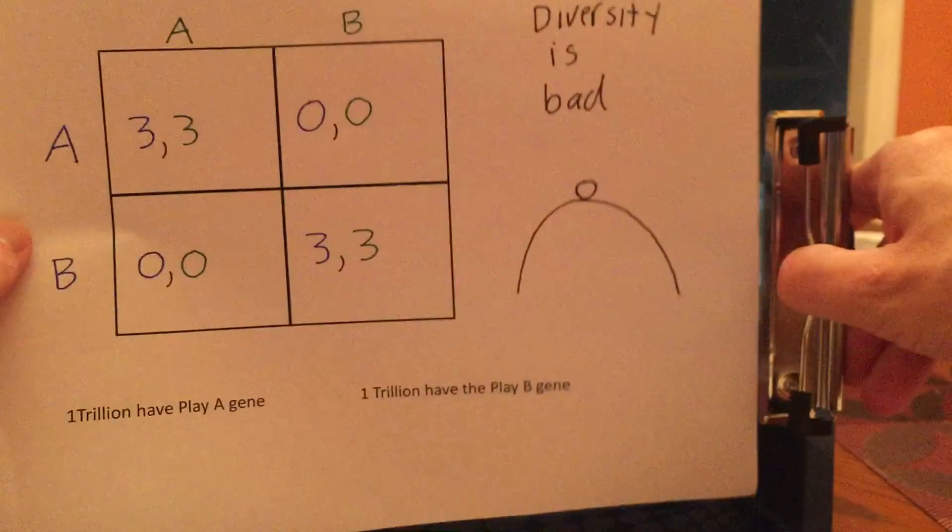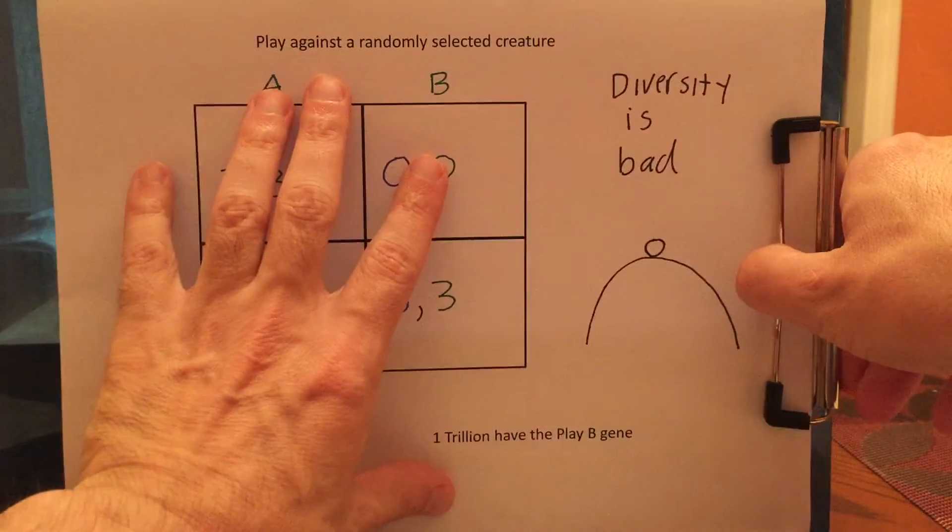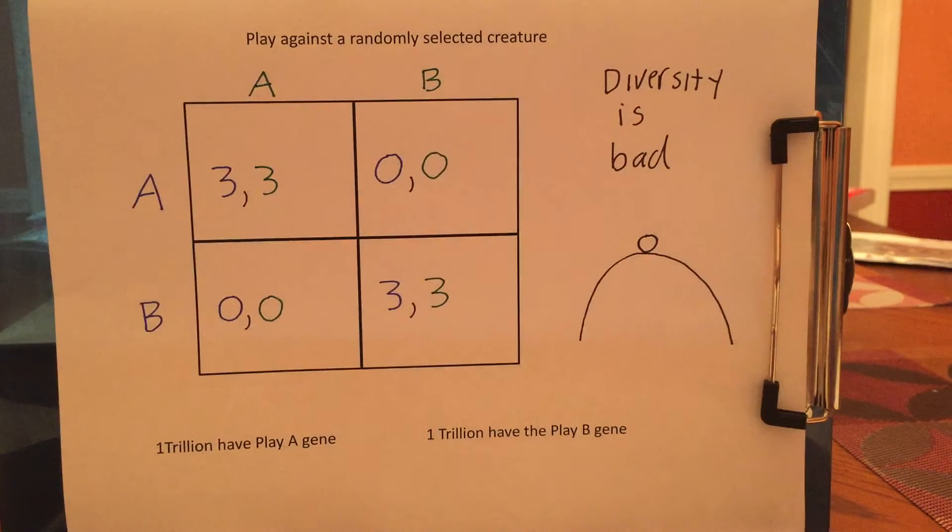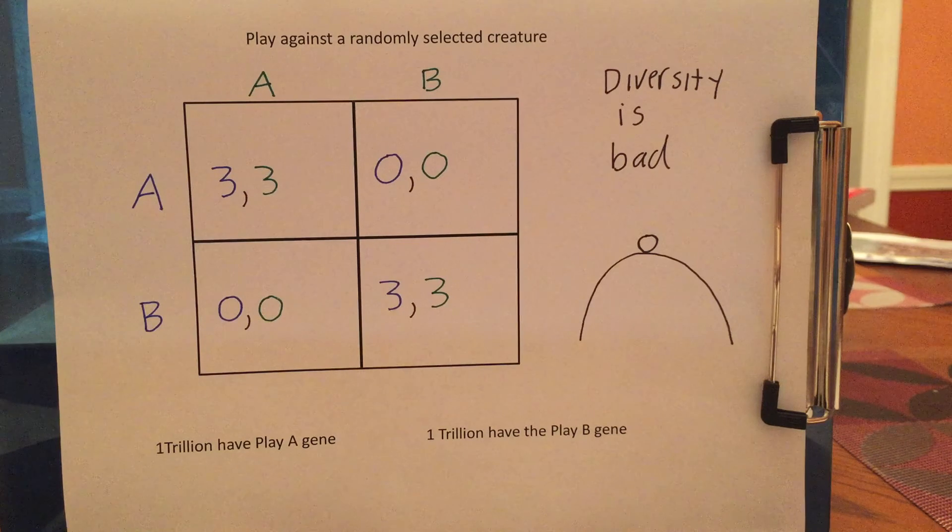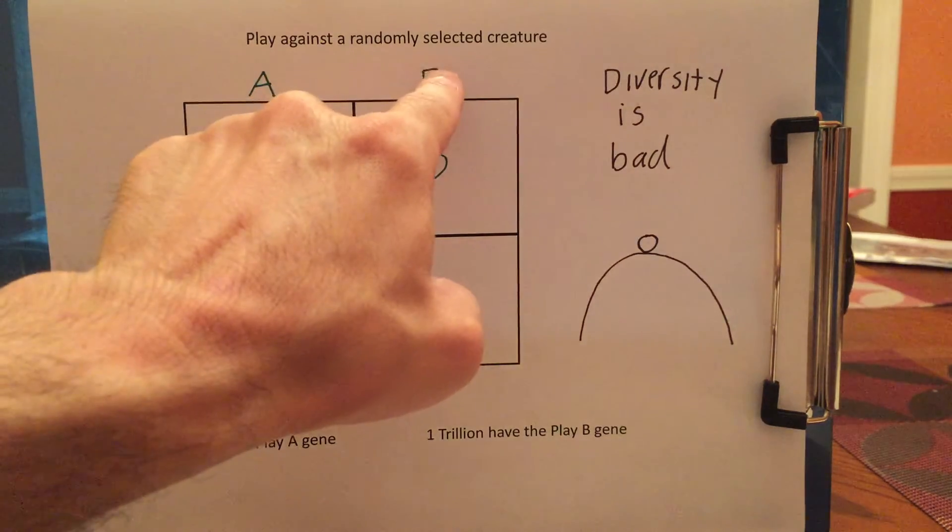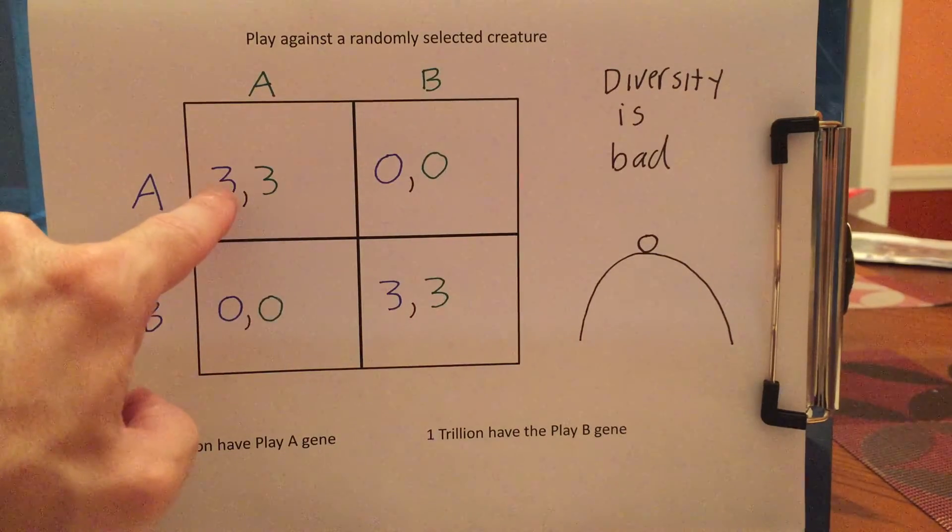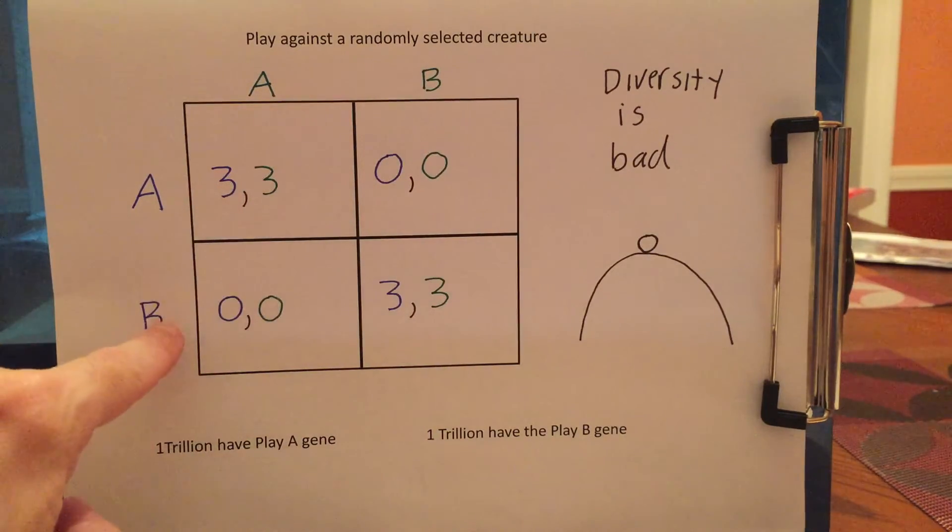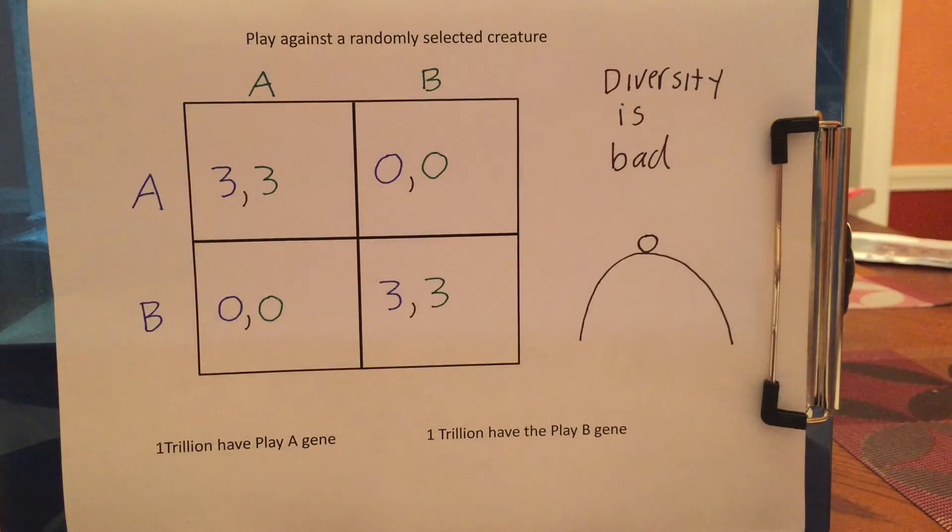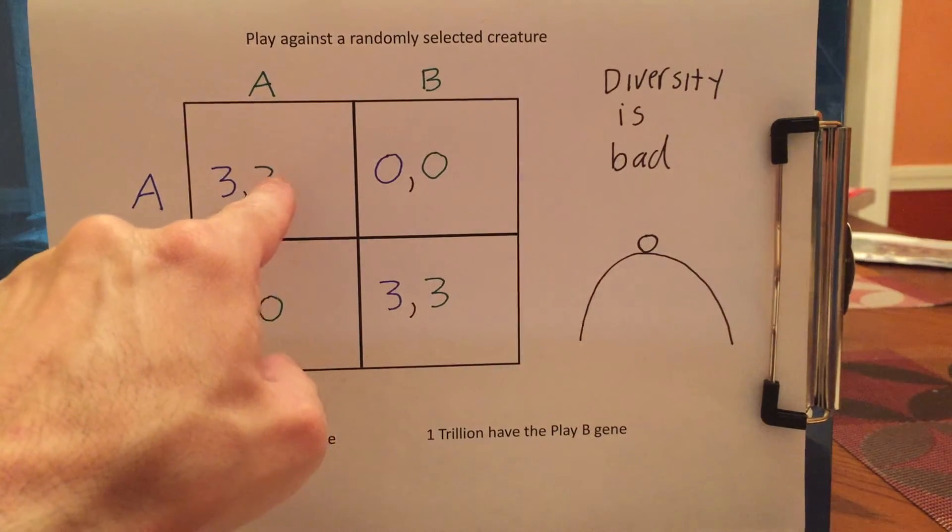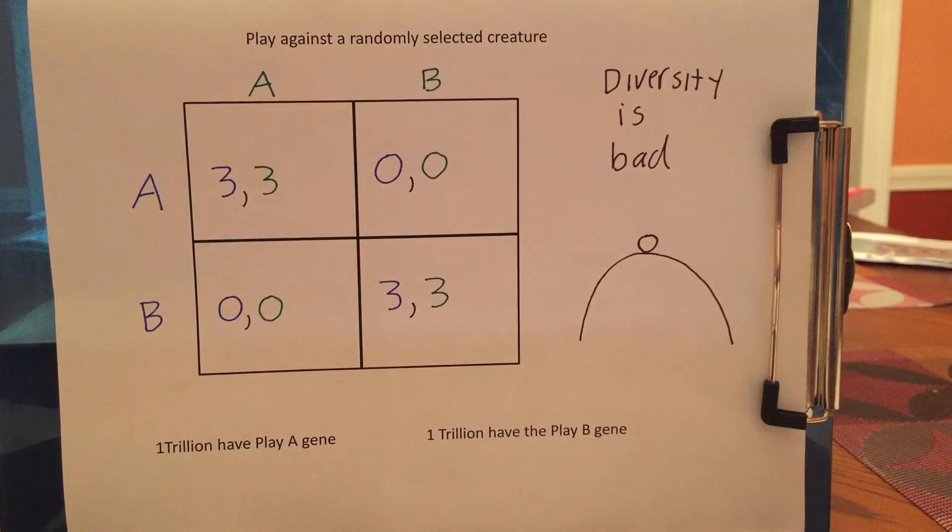Let's now consider this in the context of a coordination game. So here is a simple coordination game. And of course the Nash equilibria, A is a Nash equilibria where everyone plays A. Everyone plays B is a Nash equilibria. There's also a Nash equilibria where you play A half the time and B half the time. You can see that if he's playing A half the time and B half the time, if I play A my average payoff is 1.5, and if I play B my average payoff is 1.5. And the game is completely symmetric.